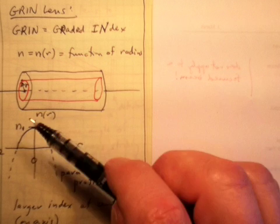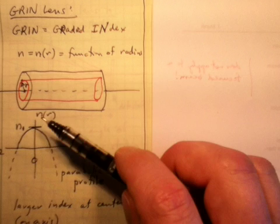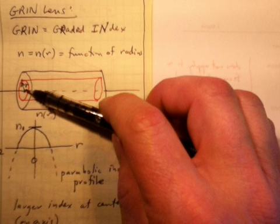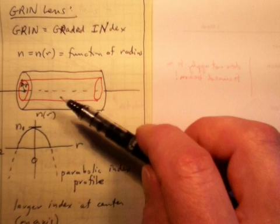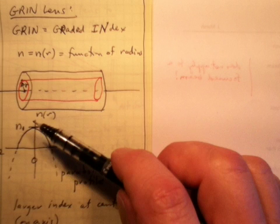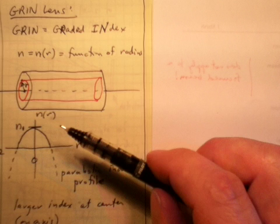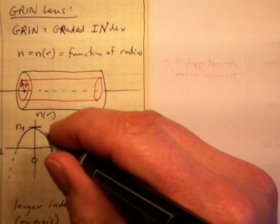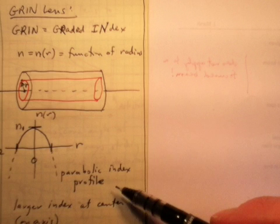And the index is given as a parabolic shape. And it has a maximum at the center on the axis at R equals 0. And that maximum is called here N1. And it has a parabolic shape going down to index N2 at the radius of the cylinder R. So it has this parabolic index profile.